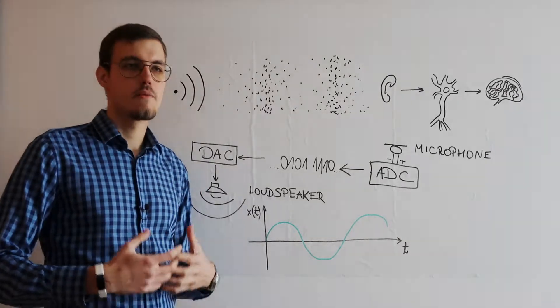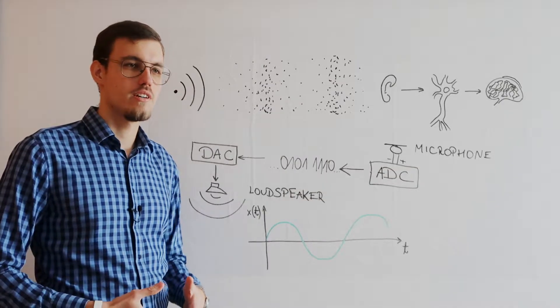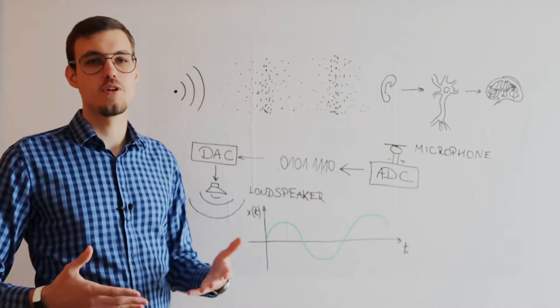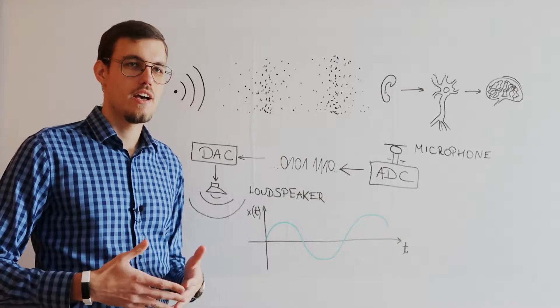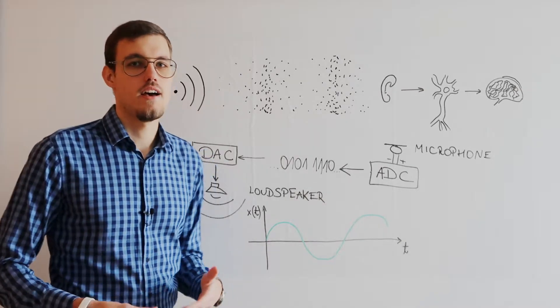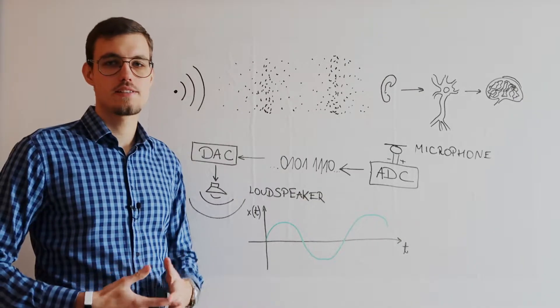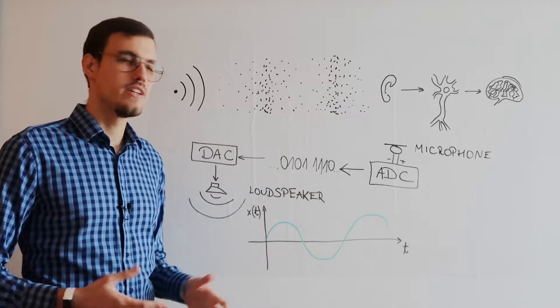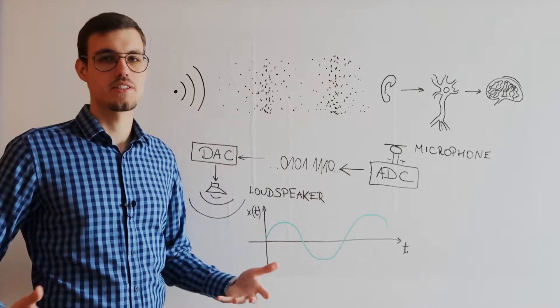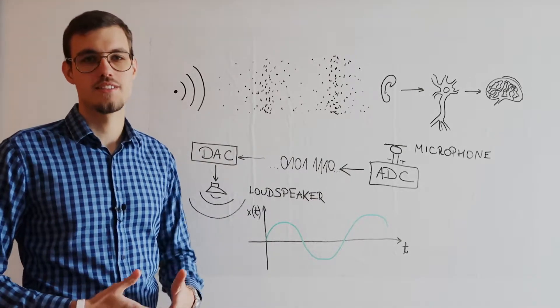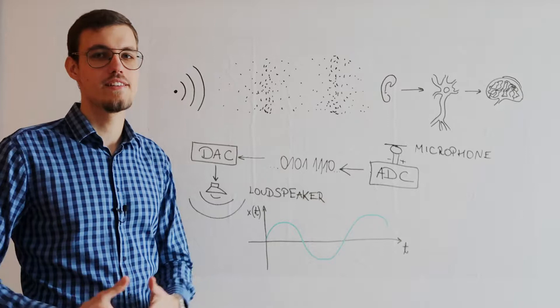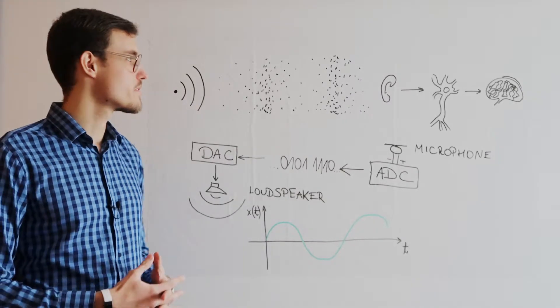Actually its membrane which under the influence of the voltage changes its position and analogously as the vocal cords before, the moving membrane hits particles of air which in turn hit other particles and in this way sound waves start propagating again and we just close this circle.